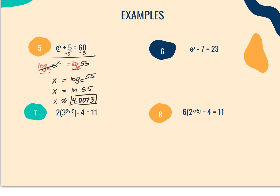Next: e^(x) minus 7 = 23. I leave e^x on the left and add 7 to both sides to get e^x = 30. I can't make the bases the same, so I do log base e on both sides — they cancel on the left, giving x = ln(30), which is approximately equal to 3.4012, rounding to four decimal places.